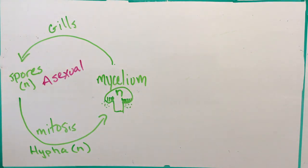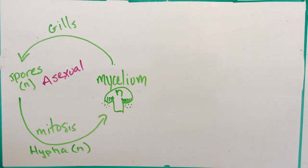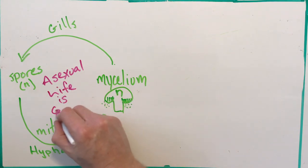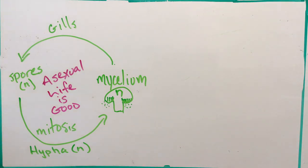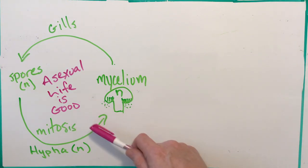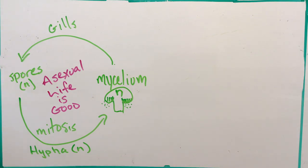Why would a fungus reproduce asexually? There's no genetic variation, and we know genetic variation helps survival when curveballs come. The fungus will go asexual when life is good — when conditions are great and there's no challenge. This way allows the mushroom to reproduce very very quickly, and since environmental conditions are great it can flourish rapidly.